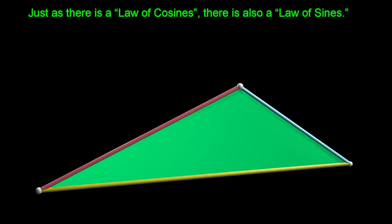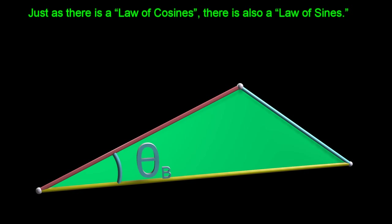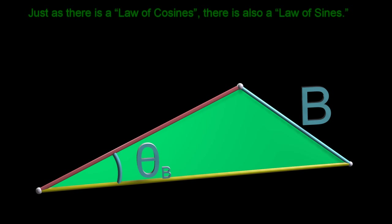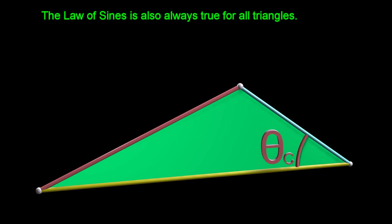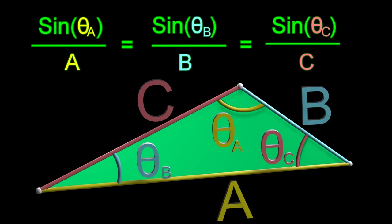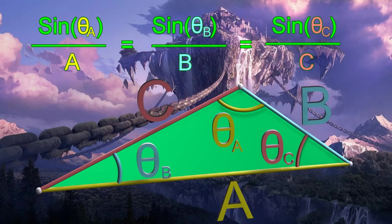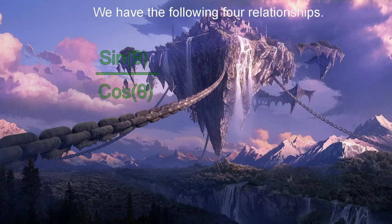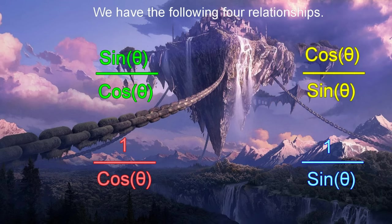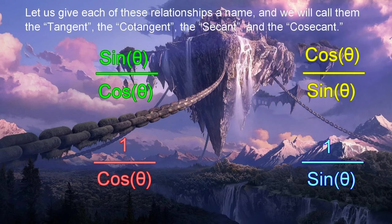Just as there is a Law of Cosines, there is also a Law of Sines. We have the following four relationships. Let us give each of these relationships a name, and we will call them the tangent, the cotangent, the secant, and the cosecant.